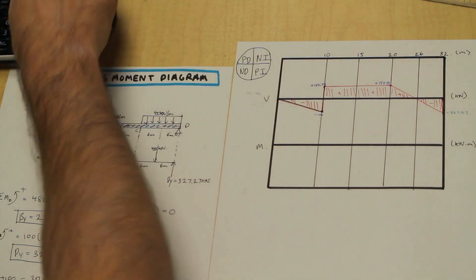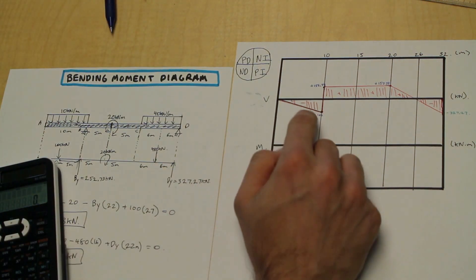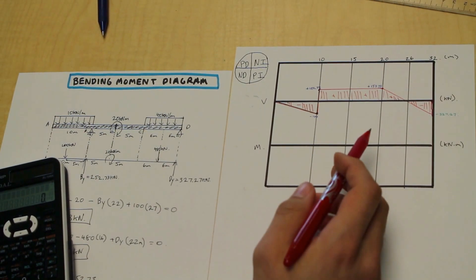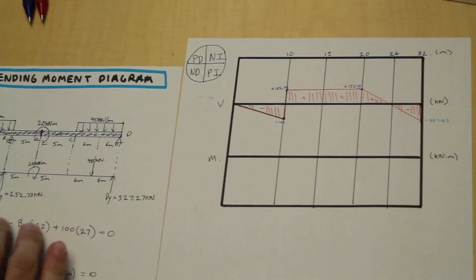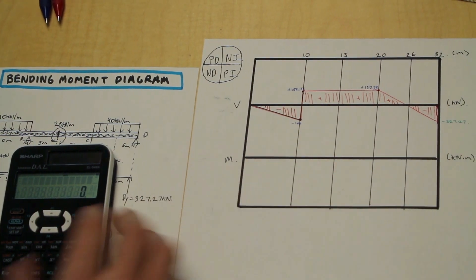Now, as we discussed before, this is a fundamental idea of how this works: the integration of this area, or the area under this curve, is equal to the bending moment. It's a mathematical principle. So how do we find the area of a triangle? Easy, base times height divided by 2. Let's do it.